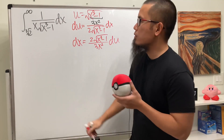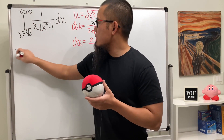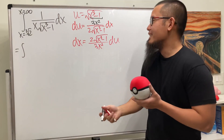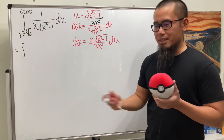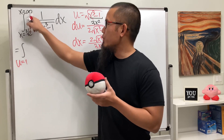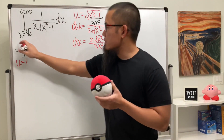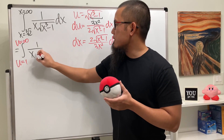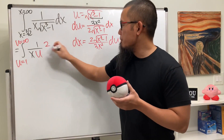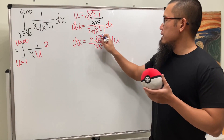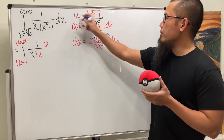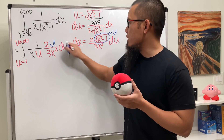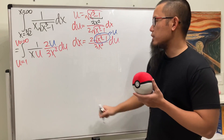Taking the integral into the u-world: the cube root and cube cancel, leaving 2 - 1 inside, and taking the square root gives 1, so it works out nicely. When we plug in infinity, u goes from 1 to infinity. The rest becomes 1 over x, where x³ is our u expression, and dx is that substitution. We get 2u in the numerator, and notice this simplifies with the u terms.